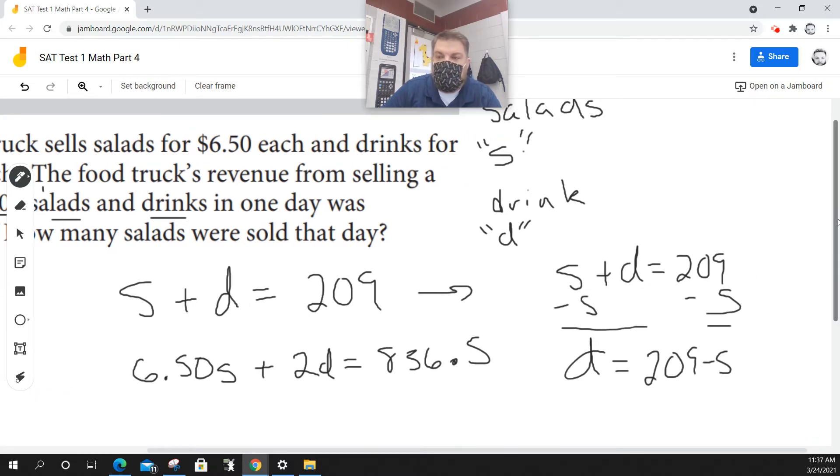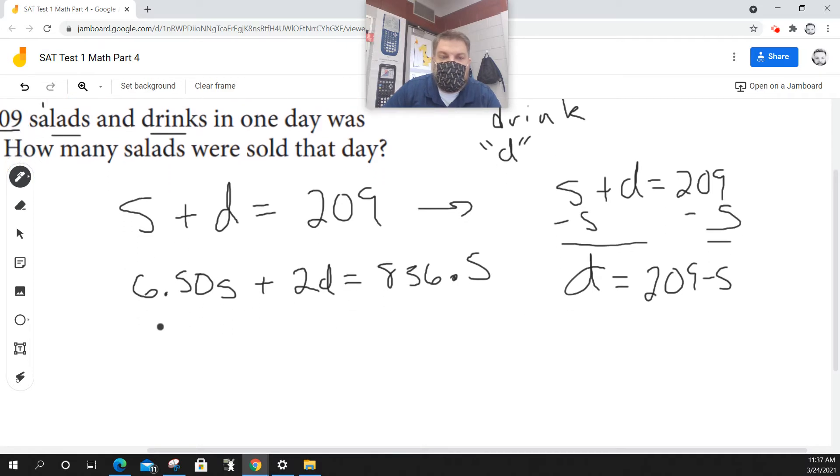So then what I'm going to do is I'm going to take this equation, 6.50S plus 2D, but instead of plugging in D, I'm going to plug this in: 2 times 209 minus S. And all of that is equal to 836.5.